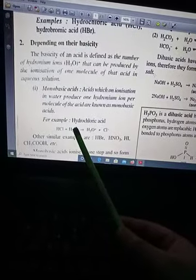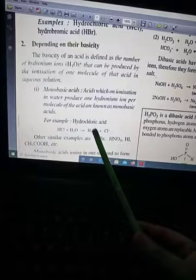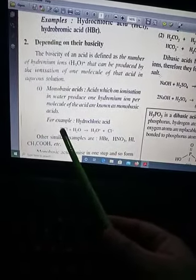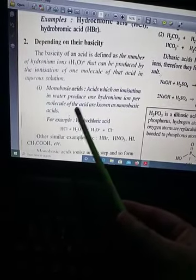Let us try to understand this. For example, when you take HCl and dissolve it in water, it forms hydronium ion H3O+ and Cl-. In this acid we have one H+, and because of that one H+, it will be a monobasic acid.